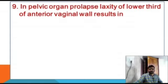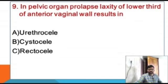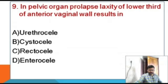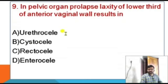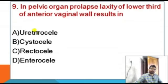In pelvic organ prolapse, laxity of the lower third of the anterior vaginal wall results in — options: urethrocele, cystocele, rectocele, enterocele. The correct answer is urethrocele. The urethra is the tube carrying urine from the bladder to outside the body; urethrocele is its prolapse. Laxity of the lower third of the anterior vaginal wall results in urethrocele.